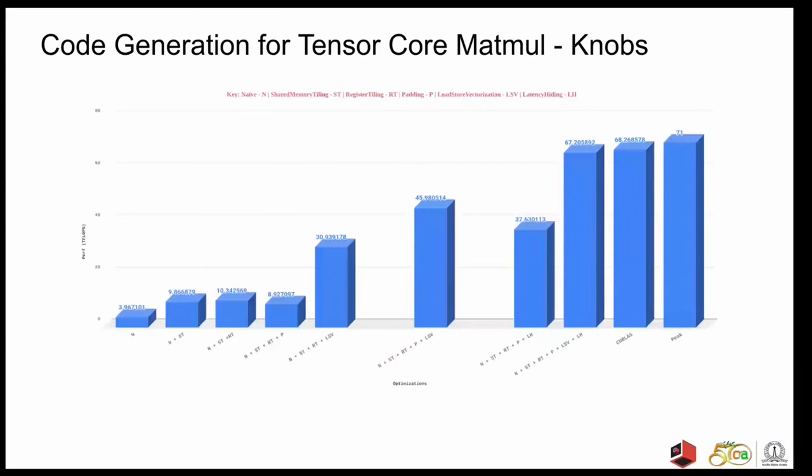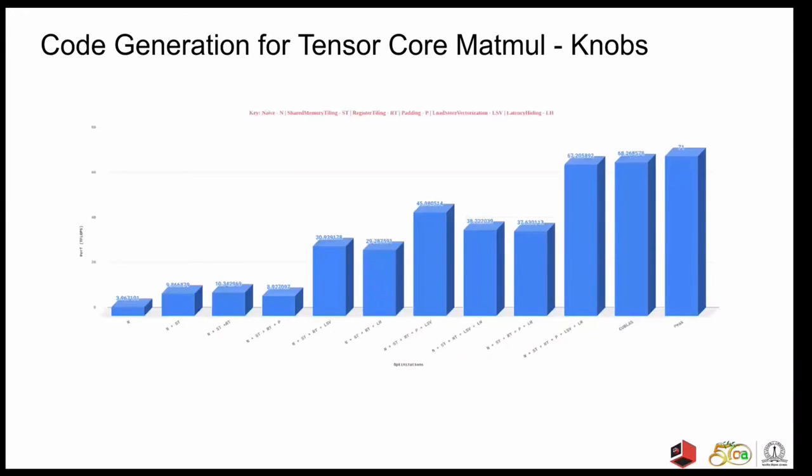Now that all optimizations are in place, we can see how else is the performance impacted. Turning off load store vectorization in the most optimized version drops the performance down to 37 teraflops, as the loads from global memory are much slower now. Removing load store vectorization, latency hiding, and padding from the most optimal version reduces down the performance to 29 teraflops. In conclusion, all of the transformations are actually necessary to give the most optimal performance for MatMul on tensor cores.